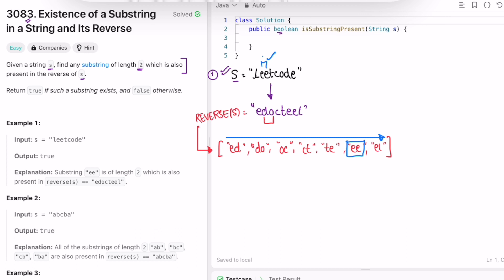Since there is a substring in s and also reverse of s and it is of length 2, we return true as the output. In any case, if you form all the substrings and checked all of them and still didn't find anything, we return false as the output.